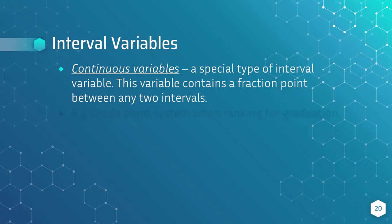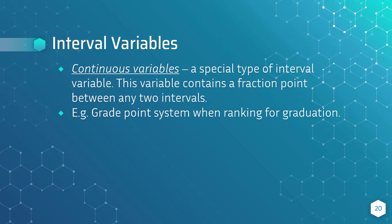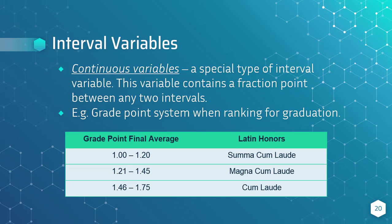There is a special type of interval variables called continuous variables. This variable contains a fraction point between any two intervals. Taking the grade point system as an example — looking at the grade point final average that becomes the basis for graduating students — the table shows the grade point average and its corresponding Latin honors. If the student's final average is between 1.0 and 1.20, the student is considered summa cum laude. If the average is between 1.21 and 1.45, the honor is magna cum laude. Lastly, if the average is 1.46 to 1.75, then the student is a cum laude.